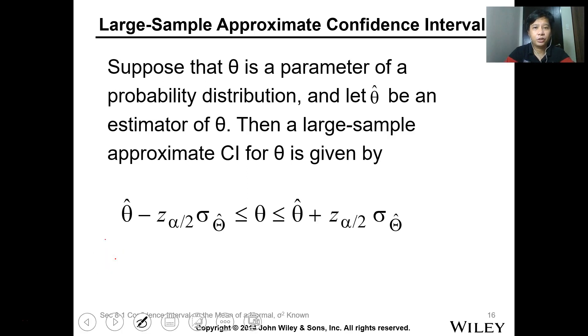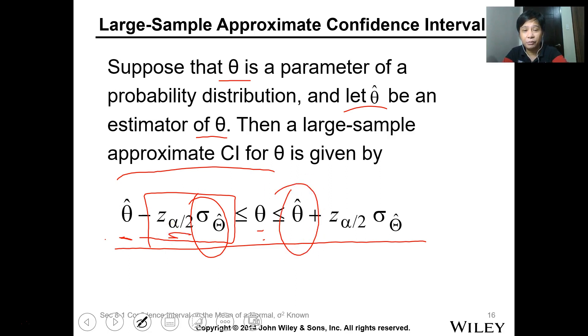For a large sample approximate confidence interval, suppose that theta is a parameter of a probability distribution, let theta hat be an estimator of theta. Then a large sample approximate confidence interval for theta is given by this expression, where theta is between your estimator minus sigma times the standard deviation of your estimator times your z.